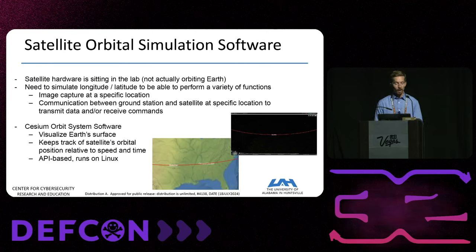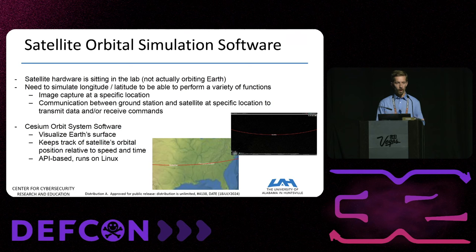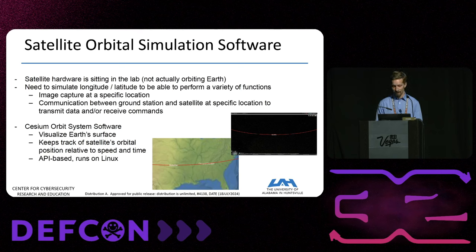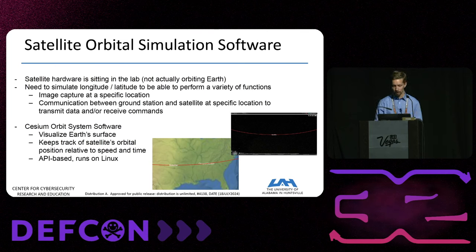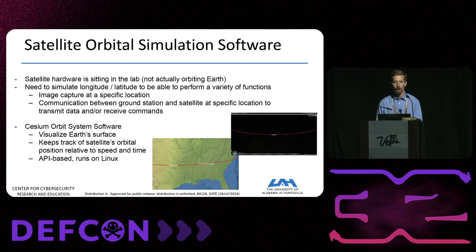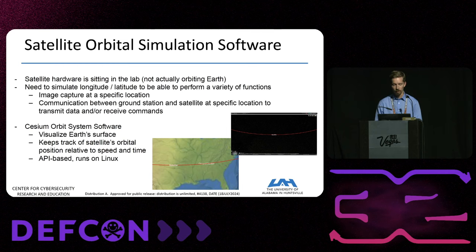With the satellite sitting on a lab table we had to simulate actual orbital movement. We tried various open-source software and found that Cesium orbit software worked best with our setup. We configured two views — a satellite view and a view from earth — and as it moves around the world, whenever it comes within range of the pre-configured GPS location of our ground station, the communication window opens and closes, triggering message transmission up and down between ground station and satellite.